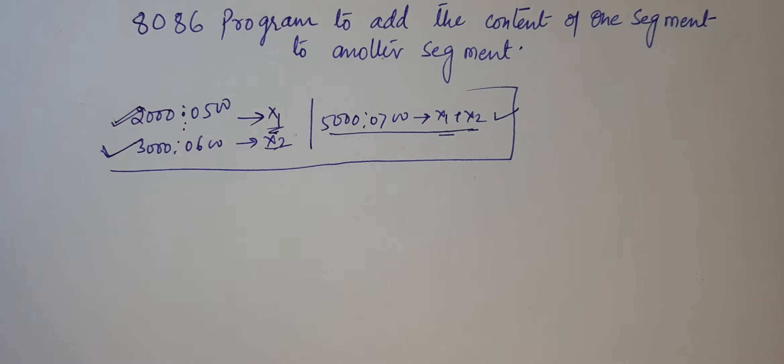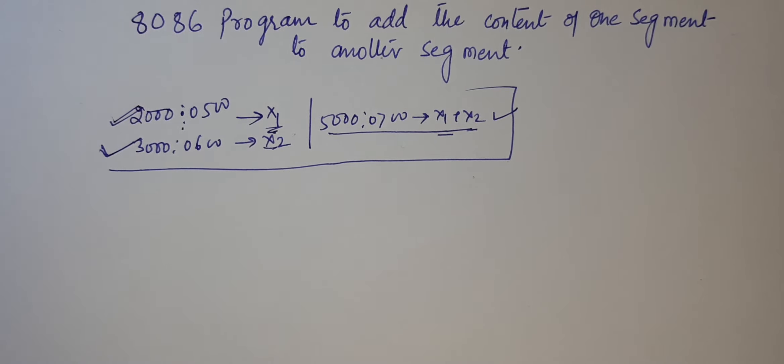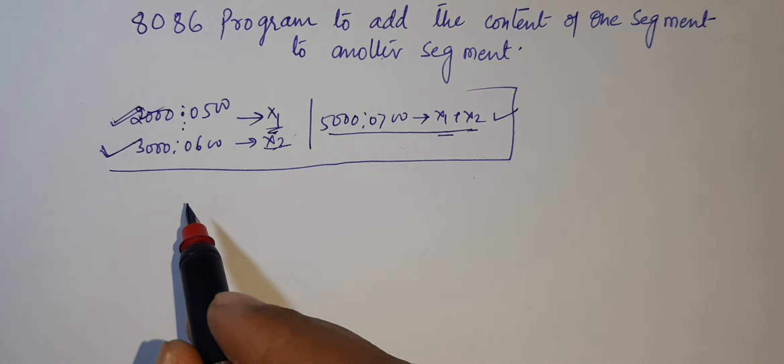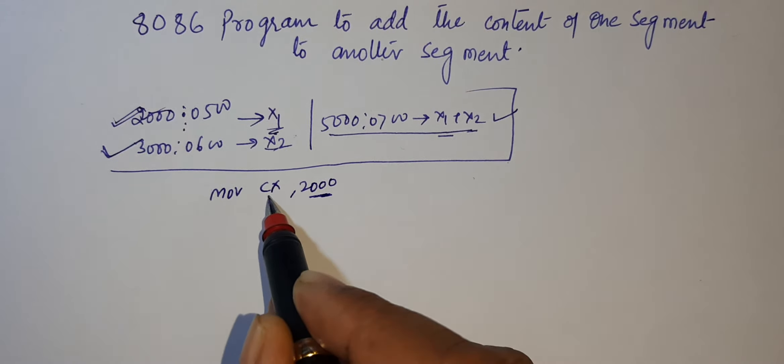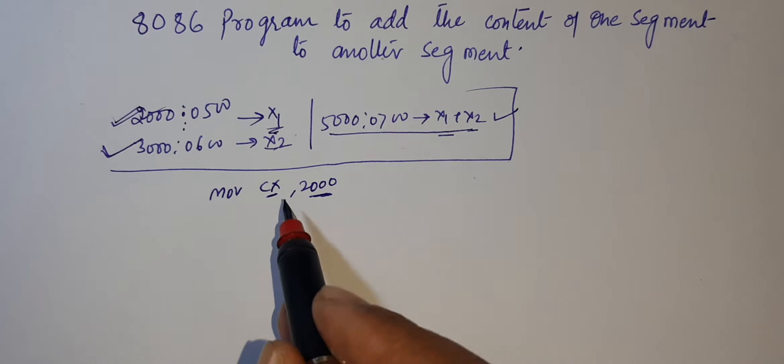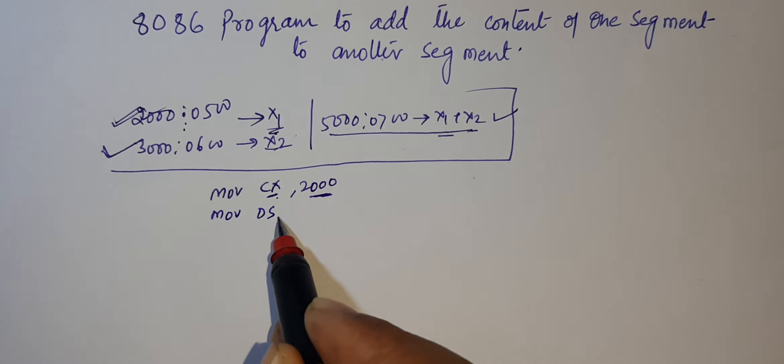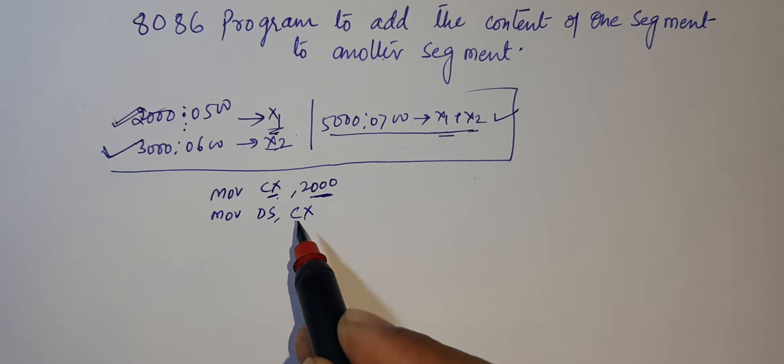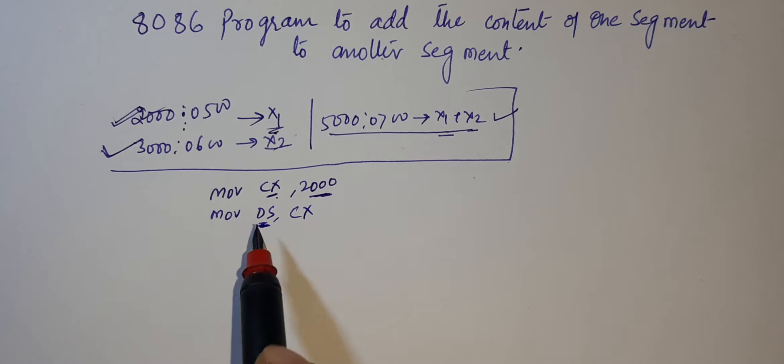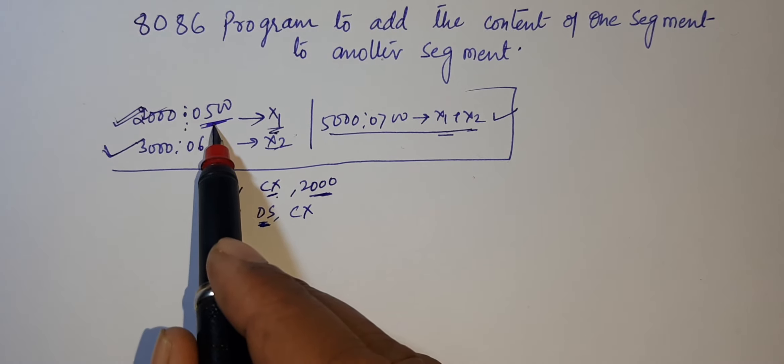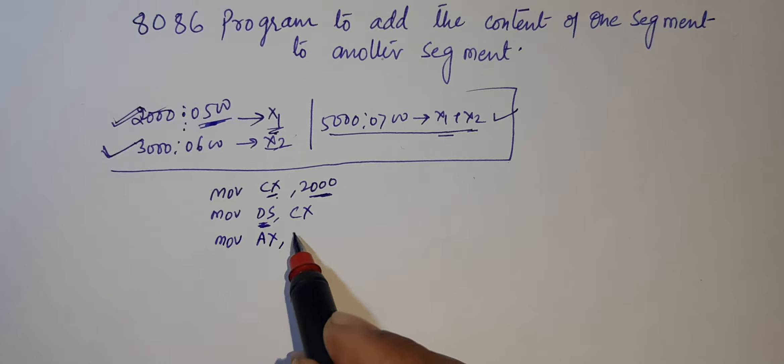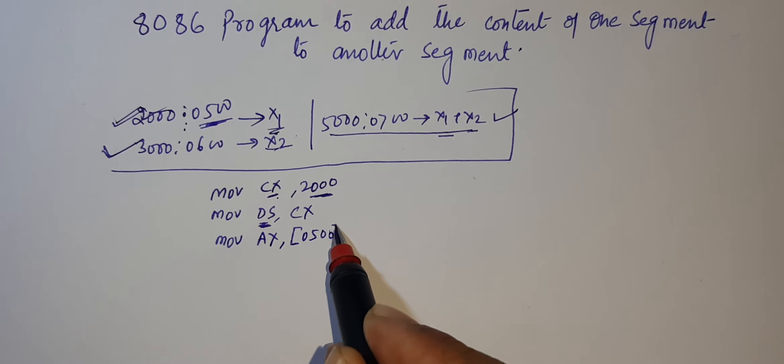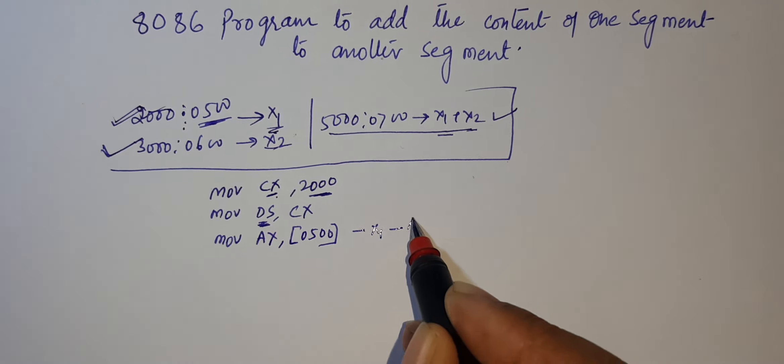Now let's start. First of all, let's talk about this location. What did we do? First of all, move CX, 2000. 2000 was stored in CX. After that, we stored the CX to the data segment. Now, we store the data, then we can move. Sorry, AX, not X. What was our X1 now? Now AX. This means first data.